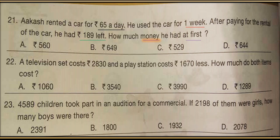Question number 21: Akash rented a car for Rs. 65 a day. He used the car for one week. After paying for the rental of the car, he had Rs. 189 left. How much money did he have at first? I have underlined the keywords — use the keywords and try to solve the question. See the solution at the end of this video.